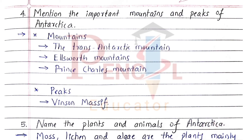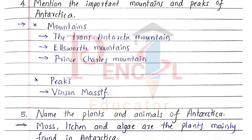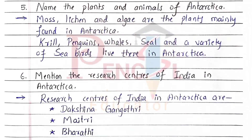The peak is Vinson Massif. 5th Question: Name the plants and animals of Antarctica. Moss, Lichen, and Algae are the plants mainly found in Antarctica. Krill, penguins, whales, seals, and a variety of sea birds live there in Antarctica.